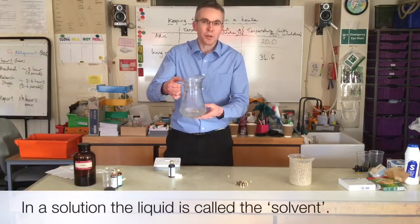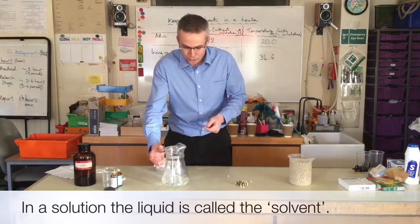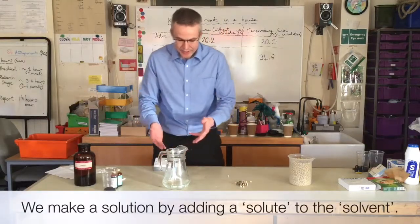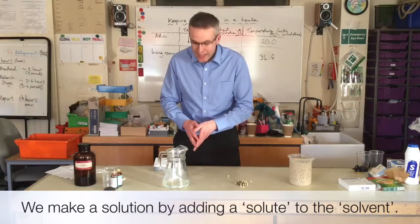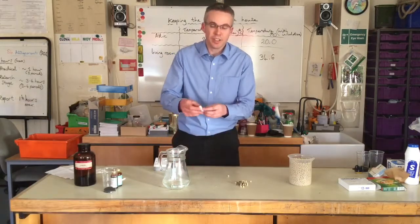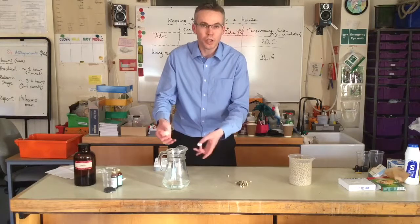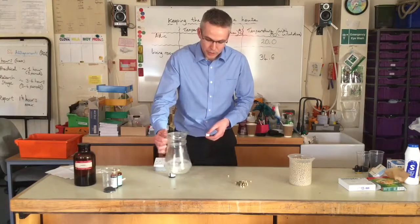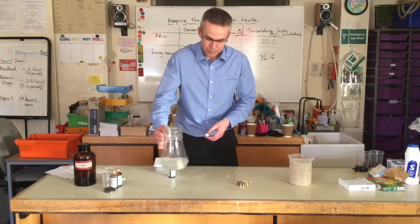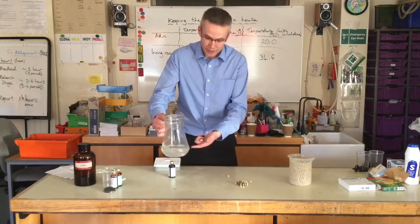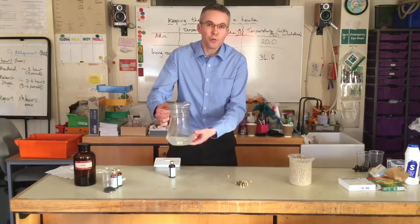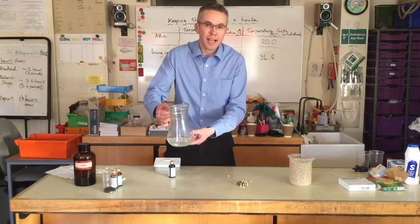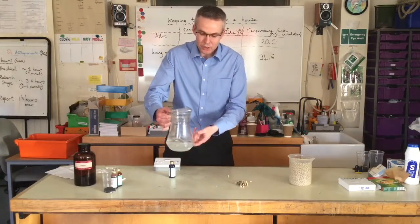Water is the liquid, or solvent, that you'll use. To the solvent, you can make a solution by adding something called a solute, which can be a solid. For instance, these are just sugar cubes, and of course sugar dissolves in water. If I put these sugar cubes in and stir it around for long enough, the sugar will dissolve into the water, and what we're making is a solution. The solid dissolves into the water, and it's still a mixture because we could get the sugar back if we let the water evaporate.